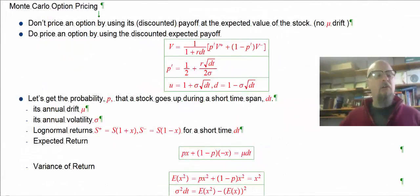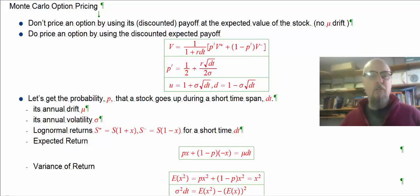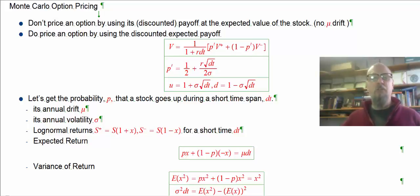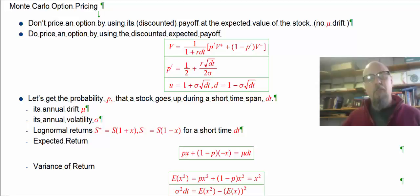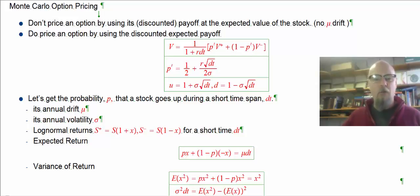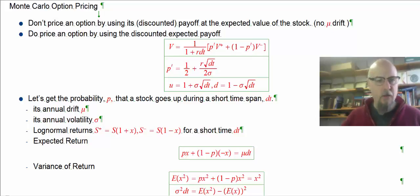Let's look at pricing an option using Monte Carlo methods. Monte Carlo methods are any method that uses random numbers in the process. Specifically, the method we're going to be looking at today is called discounted expected value, or discounted mean value.